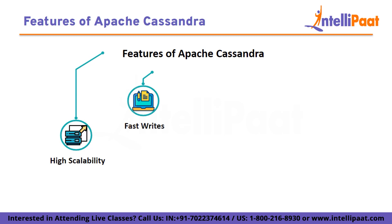The next one is fast writes. The way Cassandra handles data allows it to write to the database very quickly. Because data can be unstructured, you can essentially just push the data into the database at incredible speed.